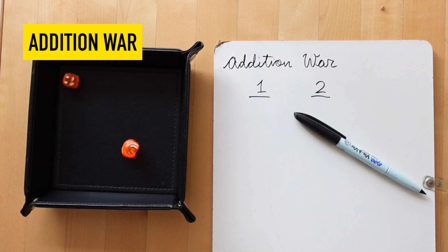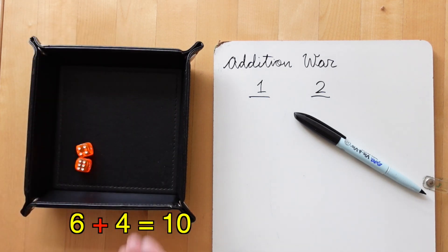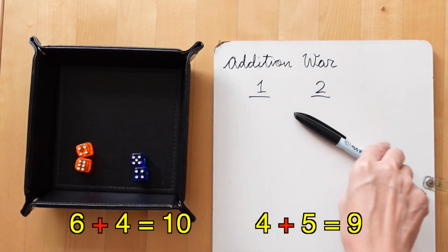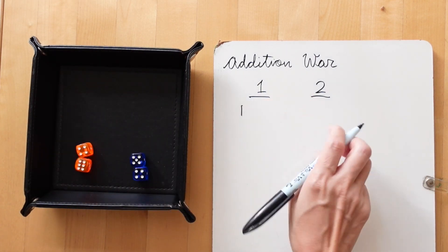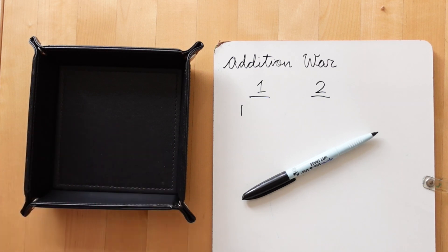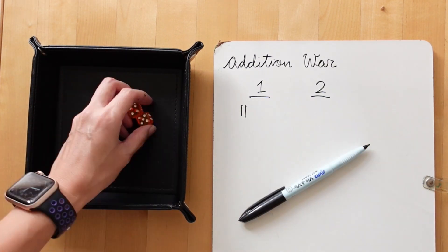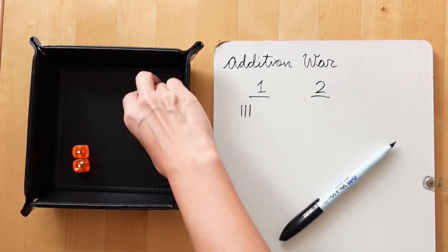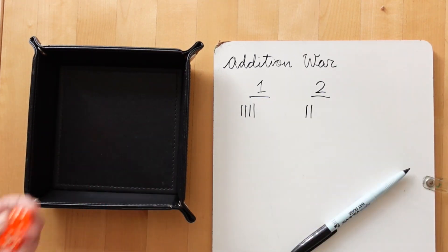One of the easiest dice games to play is Addition War. For that, you'll need at least two dice per player, or more if you want to add a few single digits together. The simplest way to keep score here is to keep a tally of which player wins each round.